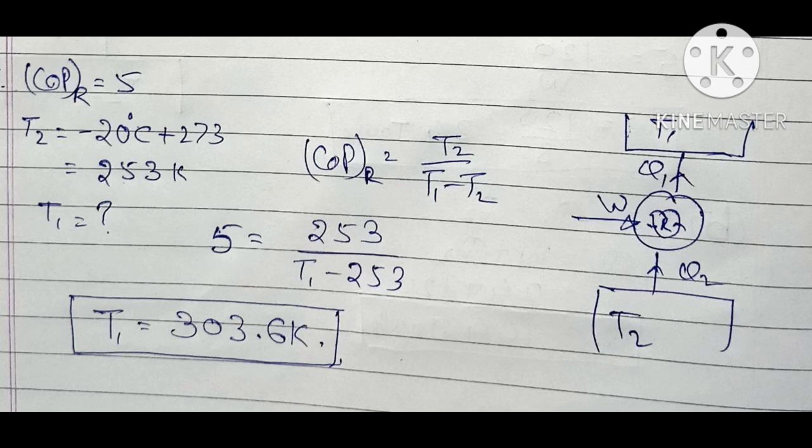In this way we can solve any problem related to COP of a refrigerator or heat pump. The key formulas are: COP of refrigerator = Q2 / W, COP = T2 / (T1 - T2), or COP = Q2 / (Q1 - Q2).